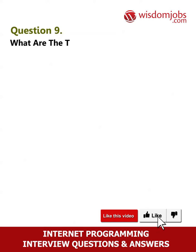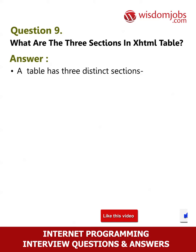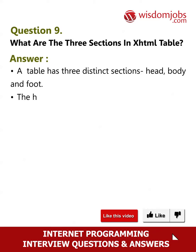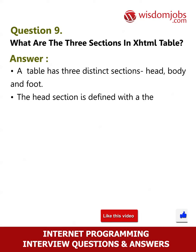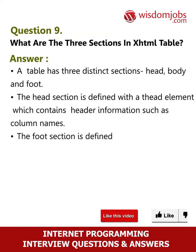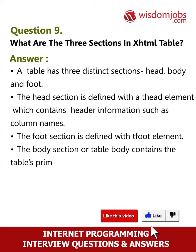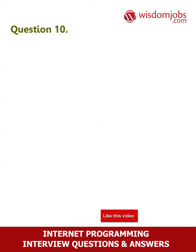Question 9: What are the three sections in an XHTML table? Answer: A table has three distinct sections: head, body, and foot. The head section is defined with the thead element, which contains header information such as column names. The foot section is defined with the tfoot element. The body section, or table body, contains the table's primary data.